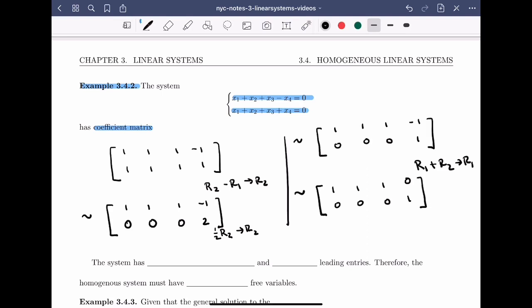Okay, so the system has, well let's see, four unknowns. Right? Those are the variables x1, x2, x3, and x4.